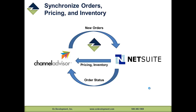As orders flow in from the marketplaces in which you sell — eBay, Amazon, and any others — Auslink picks up those orders, integrates them into NetSuite, creating a sales order. As they get fulfilled in your NetSuite warehouse, that order status and tracking information is then pushed back out to Channel Advisor and out to the marketplaces.